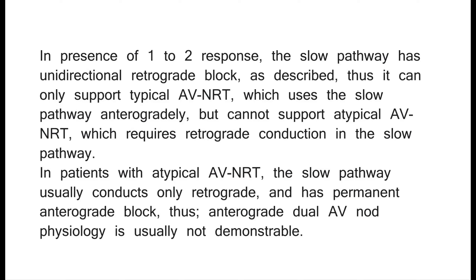This 1-2 response requires unidirectional retrograde block in the slow pathway. The fast pathway wavefront reaches the distal common pathway earlier and conducts anterograde to the ventricles, but cannot conduct retrograde in the slow pathway due to unidirectional retrograde block. The slow pathway wavefront can then also conduct to the ventricles, creating another ventricular response. In the presence of a 1-2 response, the slow pathway has unidirectional retrograde block, thus it can only support typical AVNRT, which uses the slow pathway anterogradely, but cannot support atypical AVNRT.